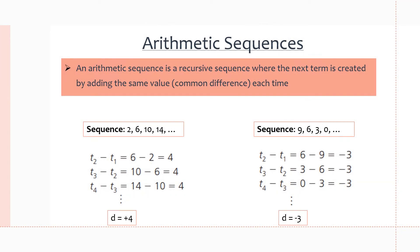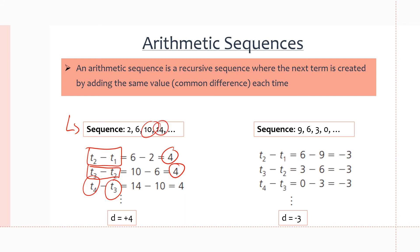An arithmetic sequence is a recursive sequence because we can use previous terms to get the following terms by adding the same value, also known as the common difference. For example, look at the sequence 2, 6, 10, 14. If we take term 2 minus term 1: 6 minus 2 equals 4. Term 3 minus term 2: 10 minus 6 equals 4. Term 4 minus term 3: 14 minus 10 equals 4. So our common difference is positive 4, meaning we add 4 each time to get the next term.